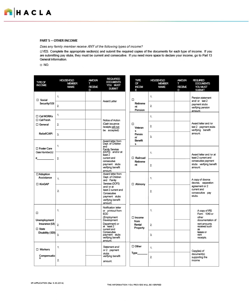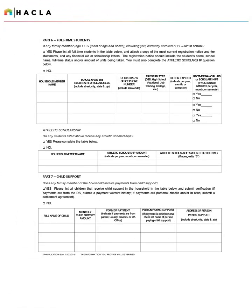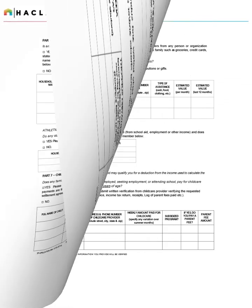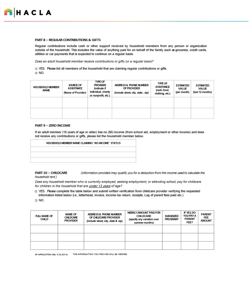Part 5 will list other types of income as well as the required documentation needed for verification. Parts 6 and 7 will list information and details on full-time students and child support and will list any required documentation needed for verification. Applicants should list any regular contributions and gifts in Part 8, any adult household members claiming zero income in Part 9, and any child care in Part 10.